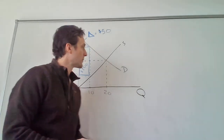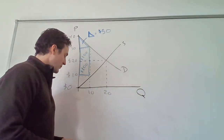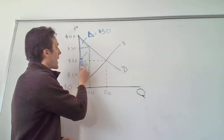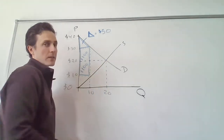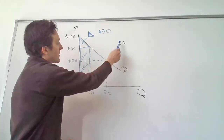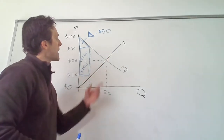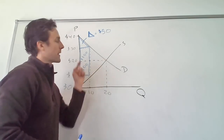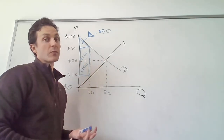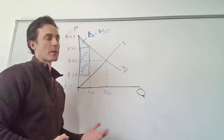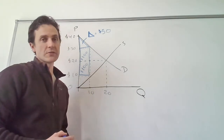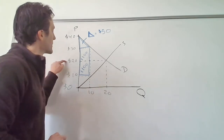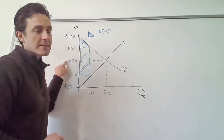In this market, the equilibrium price — where the market would tend towards — is $20. You can see the demand curve and the supply curve meet at that point, which suggests the equilibrium price would be $20 if there were no restrictions imposed on the market.